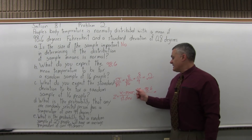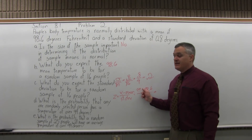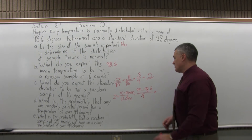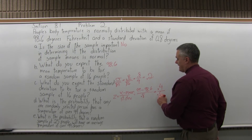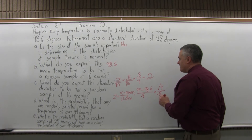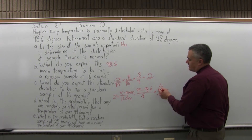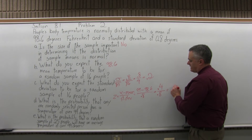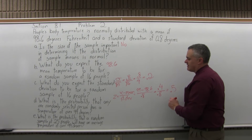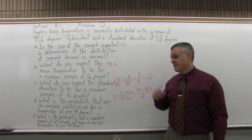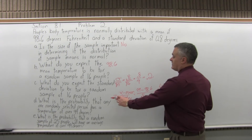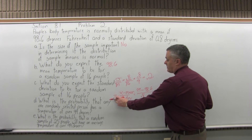So 99 minus 98.6 gives positive 0.4, over 0.8. You can cancel the decimals: 4 over 8 is a half, which is 0.5. So the Z value is positive 0.5.